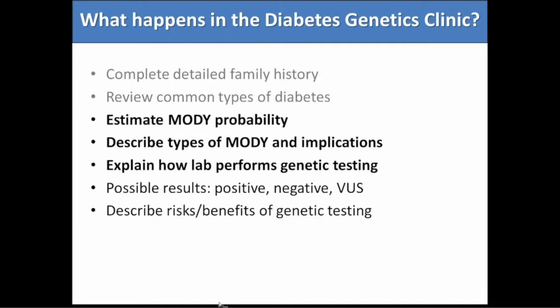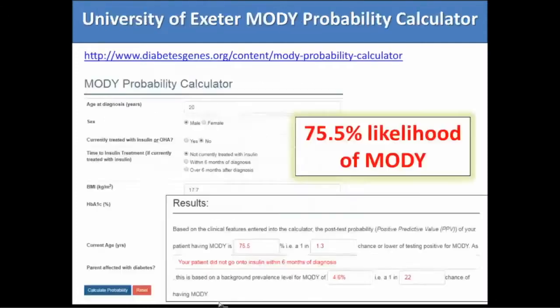For this patient, when I entered his information into the calculator, his MODY probability came up at 75.5%, which is actually the highest you can get on the calculator. So why do we care — why bother ordering genetic testing, which can sometimes be a lot of work?